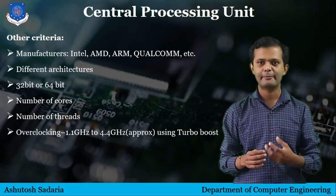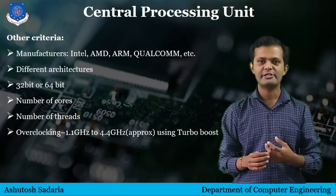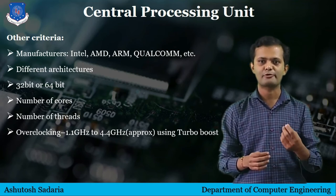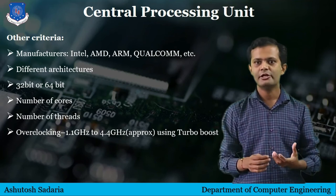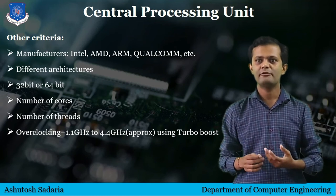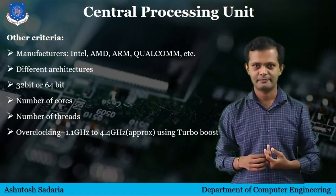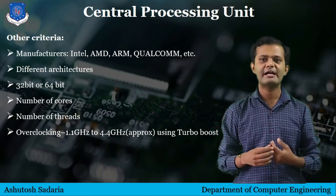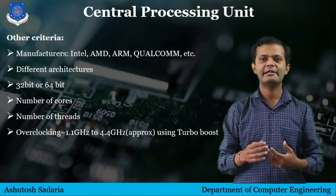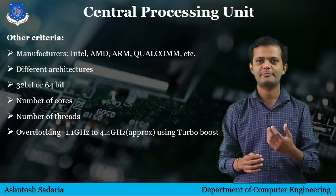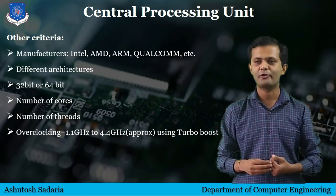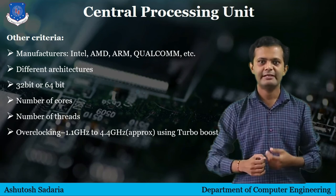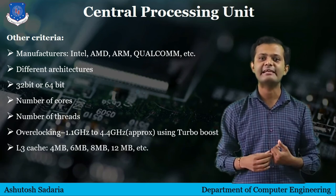Intel gives this feature the name Turbo Boost. By using this Turbo Boost functionality, you can increase the processor's base clock frequency to its overclocking frequency by a vast amount. For example, one processor has a 1.1 gigahertz base clock frequency, which you can increase to 4.4 gigahertz.